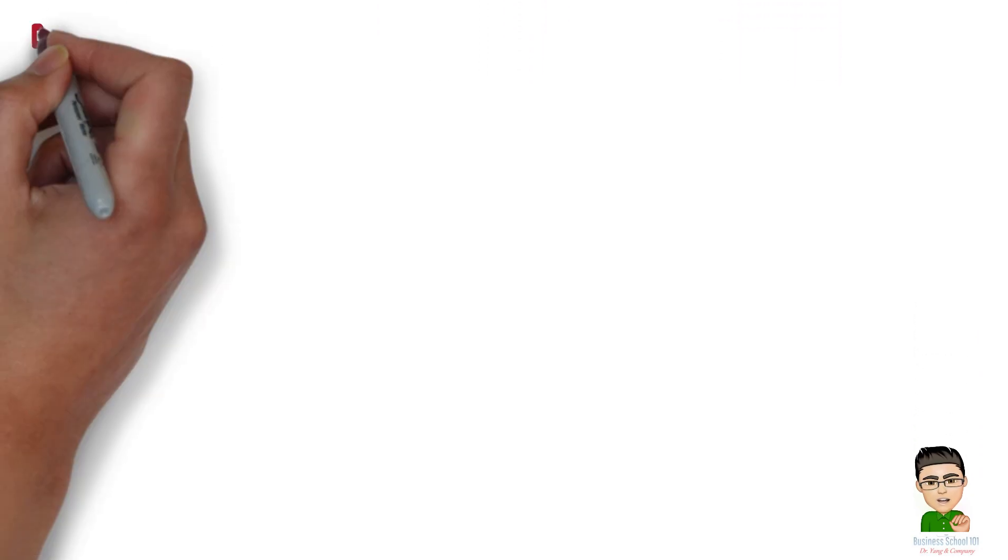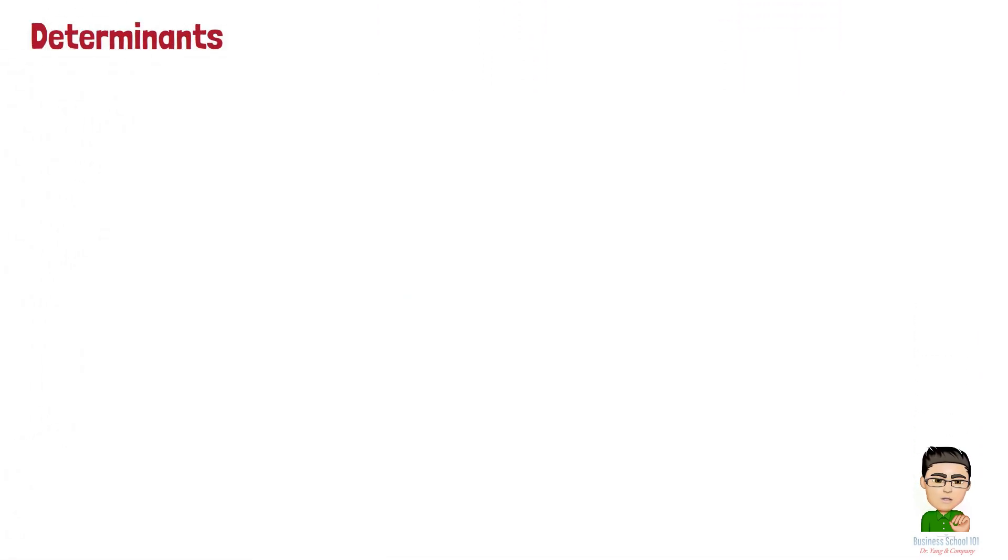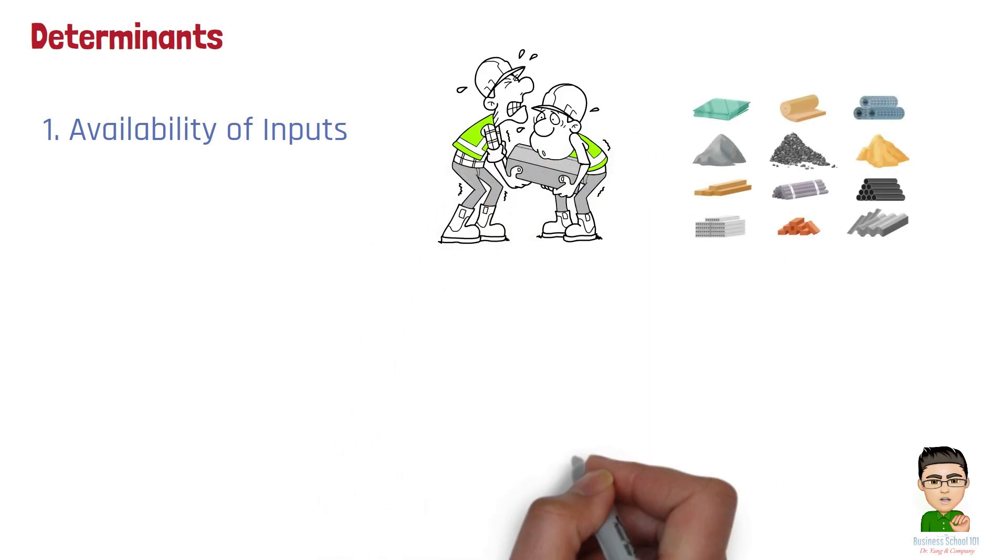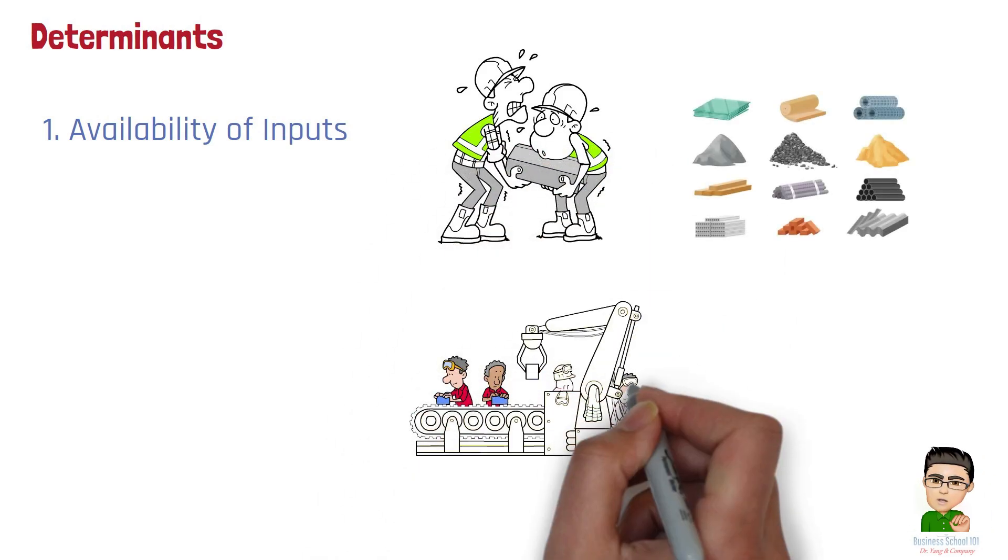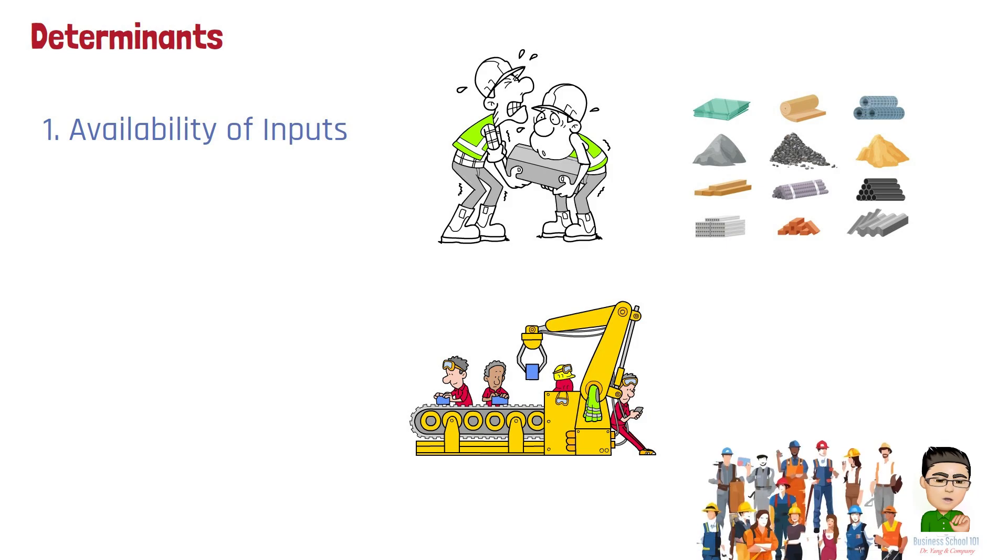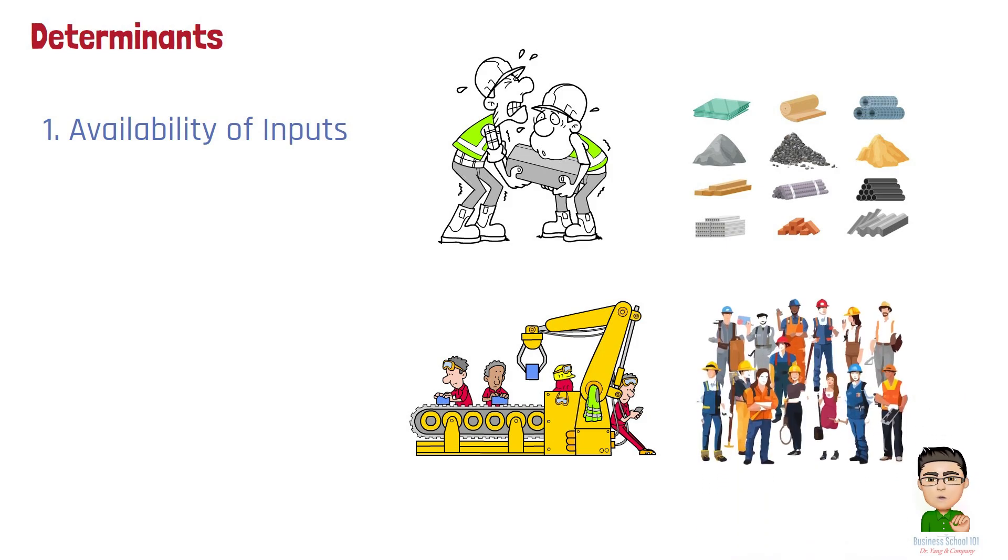Here are three main determinants of the price elasticity of supply. Number 1: Availability of inputs. The availability and flexibility of factors of production, such as labor, raw materials, and technology, significantly impact supply elasticity. If inputs are readily available and can be easily adjusted, the supply is more elastic. For example, if a factory can quickly hire more workers or access more raw materials when prices rise, it can increase output, leading to a higher elasticity of supply.